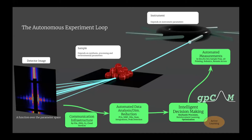We can think of it as a closed experimental loop in which we have an instrument — for many of you, a synchrotron light source; for others, a neutron source — but it can be a microscope or any other experimental instrument. The instruments have some knobs to turn, depending on some settings and parameters. Then we have a sample being probed, which depends on synthesis parameters, processing parameters, and environmental parameters. Often, finding out what happens with the sample across these different parameters and conditions is the scientific challenge.